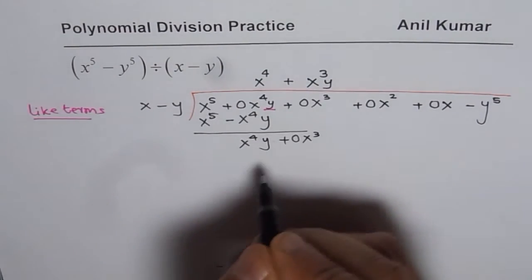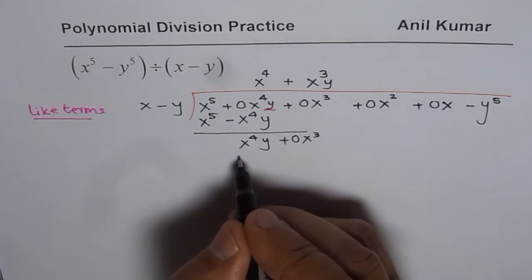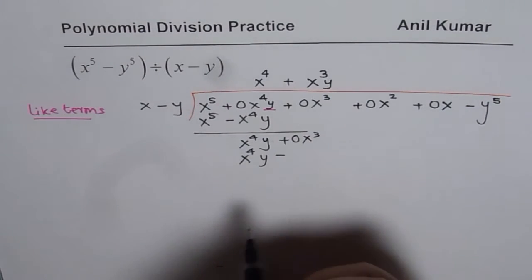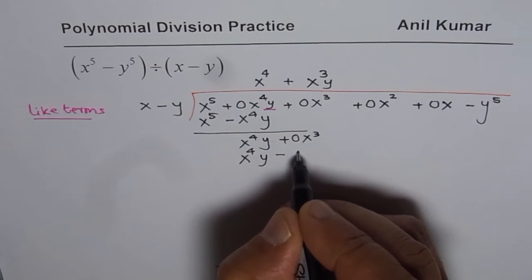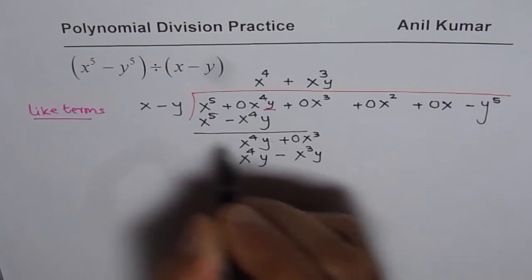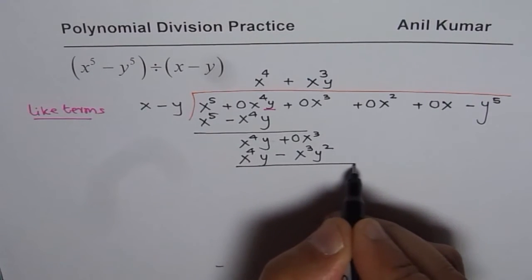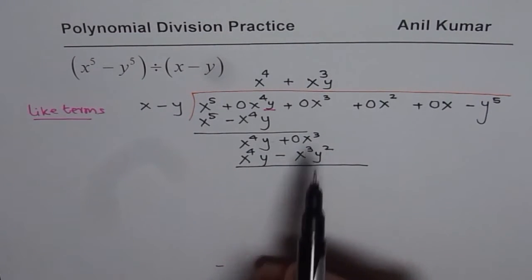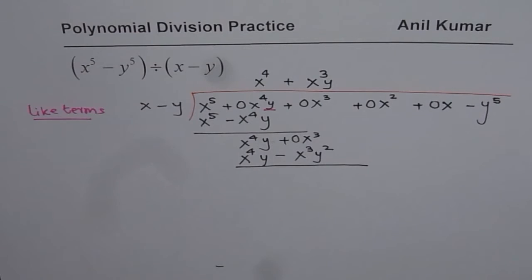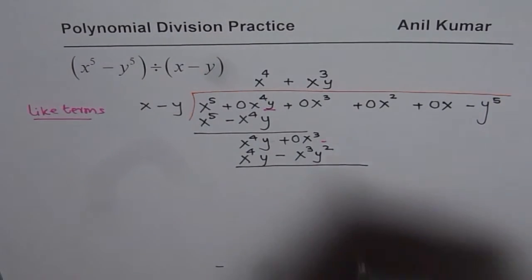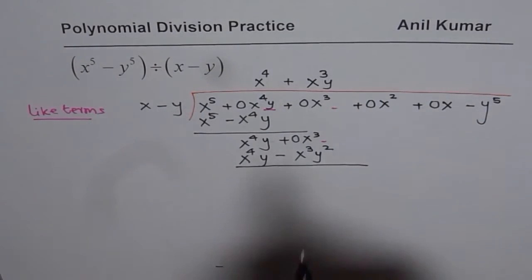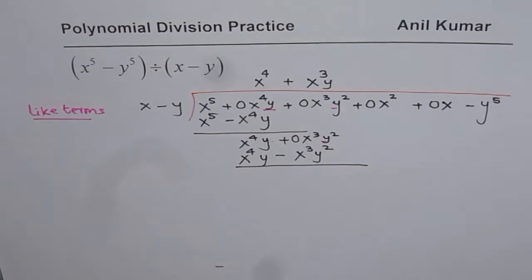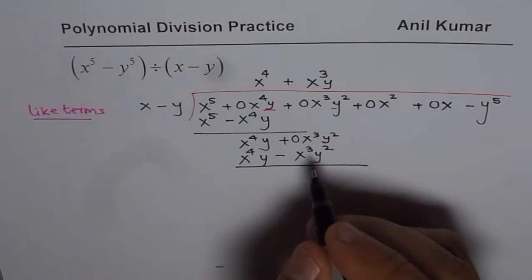Now we have to multiply by x cube y. When I multiply this I get x to the power of 4y minus x cube y square. Again the question is, how do we take away x cube y square from 0x cube? Same concept - we have to have a like term, so here we should take y square. Let's go back and introduce y square to correct it.